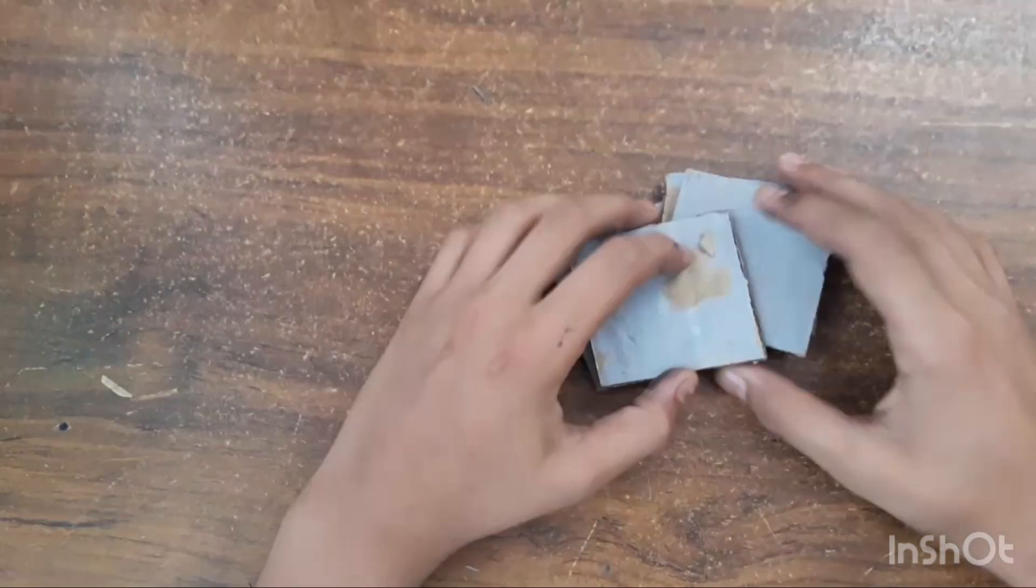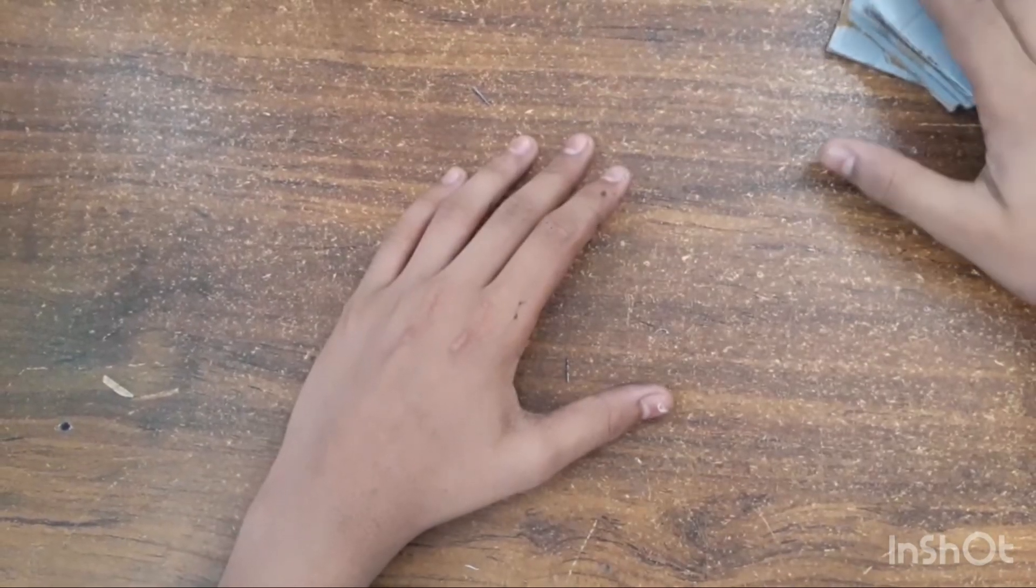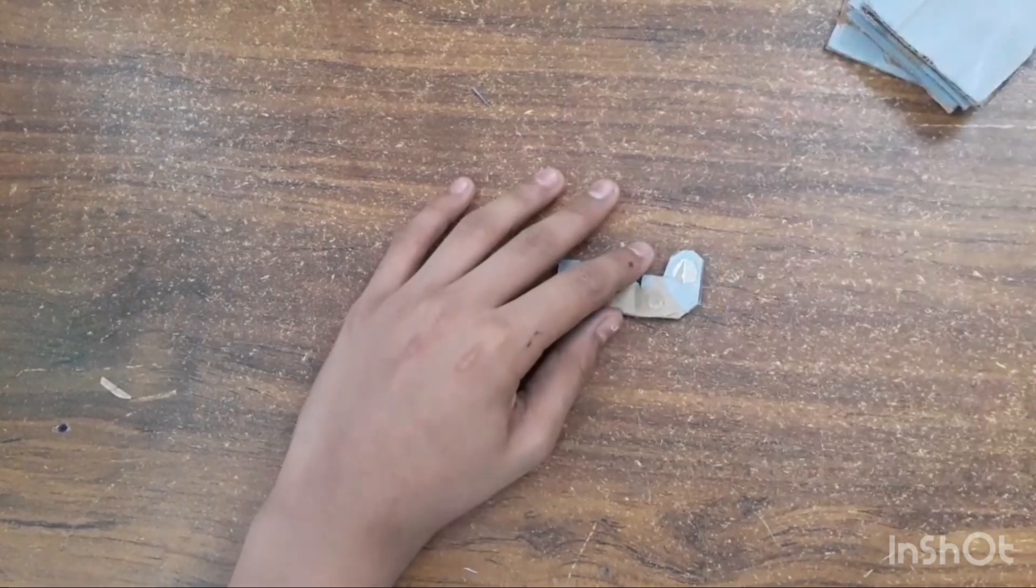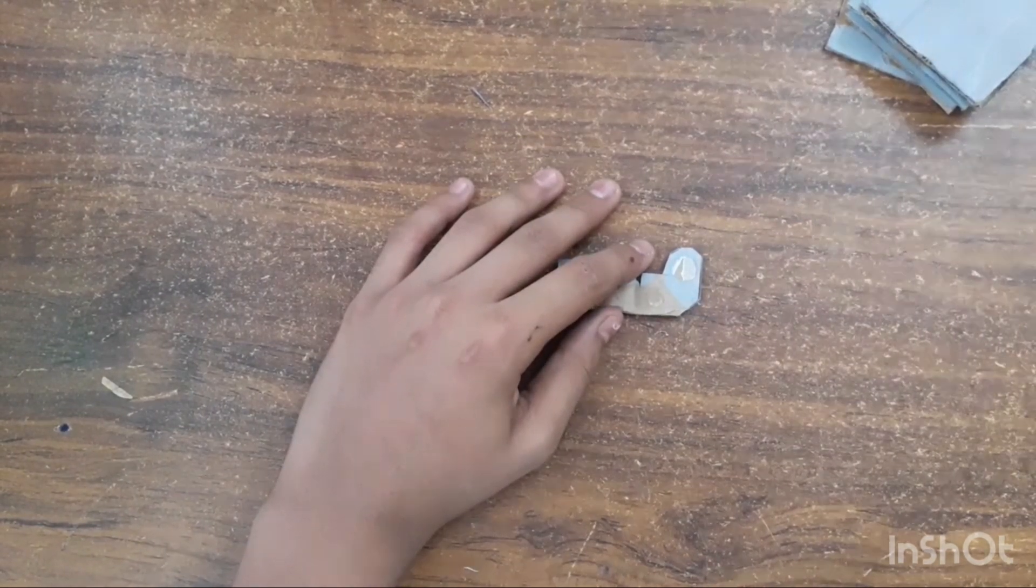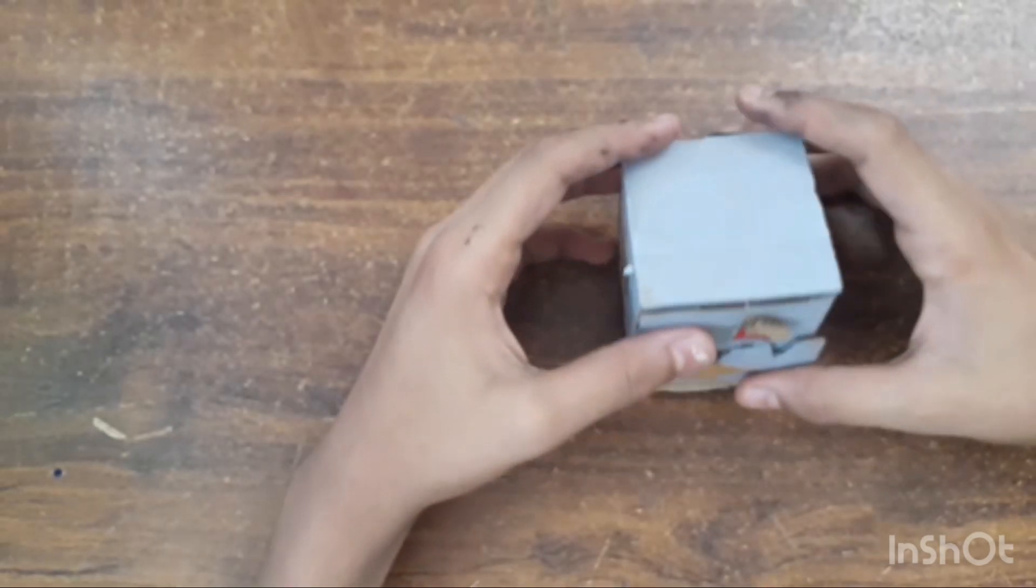Now I will glue them together so it will be in the form of a cube, and the jaw and eyes on opposite sides. Now the head is completed.